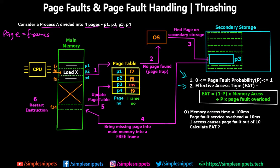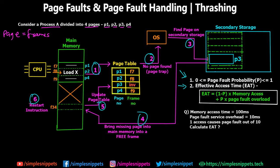Point two is the Effective Access Time, or EAT. EAT is the time required to access a particular memory address or page. The formula is: EAT = (1 - P) × memory access time + P × page fault overhead. Here, P is the probability of a page fault. So (1 - P) is the probability of no page fault times the memory access, plus P times the page fault overhead — the extra time required when a page fault happens to perform steps two through six.